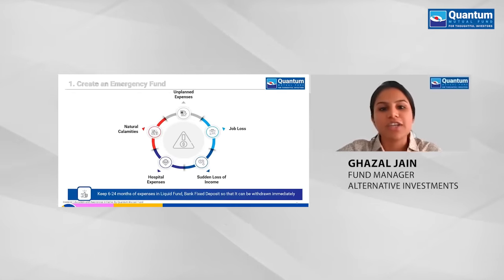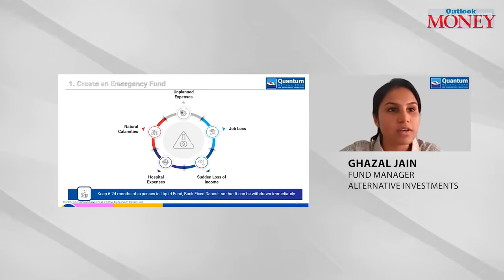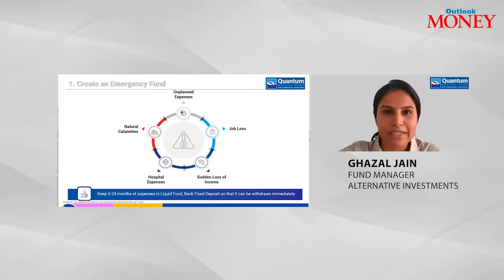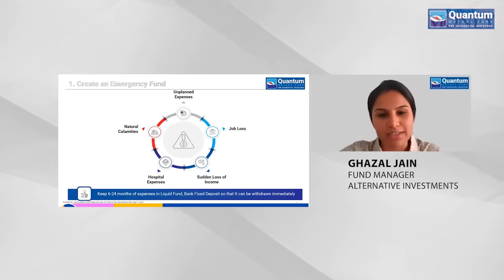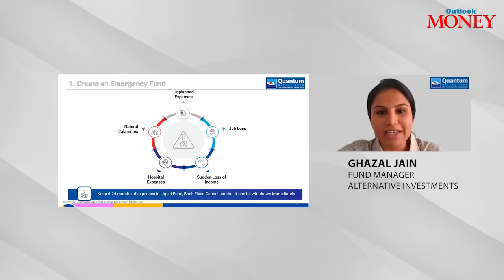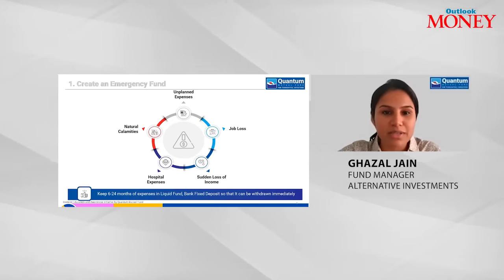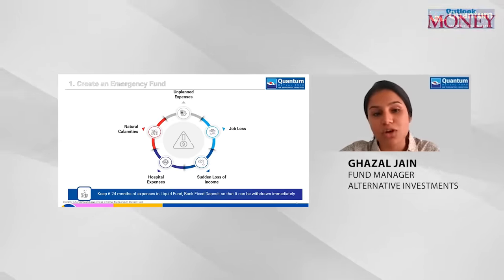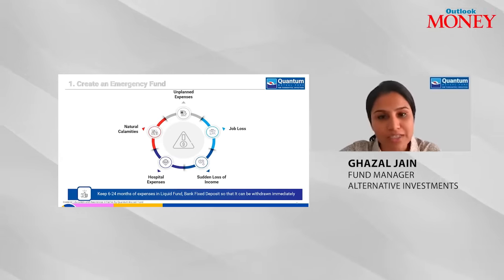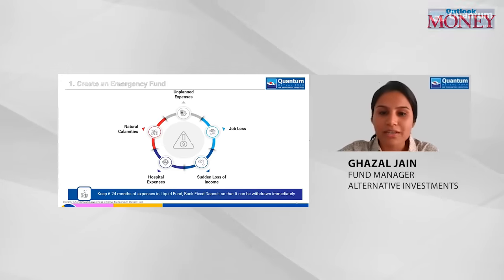Step one is creating an emergency fund. We've always been told about this, and some of us took it seriously, some didn't. COVID-19 has really woken us up to the fact that emergencies and calamities can come from nowhere and catch you by surprise. During the pandemic, apart from loss of lives, there was also loss of livelihoods, financial problems due to job losses and lockdowns. The pandemic is a stark reminder.